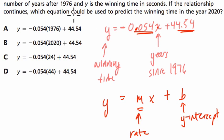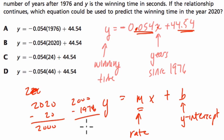Which equation can be used to predict the winning time in the year 2020? Well, 2020. Oops. 2020. That's 20 years after 2000, so it's minus 20 to get to 2000. And then 2000 to 1976 is another 24 years. So that's 44 years in the future from 1976. And we plug in 44 for x, and D is the answer. All right. I hope this helped.